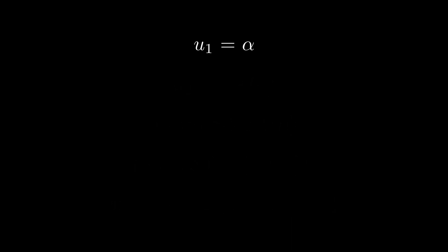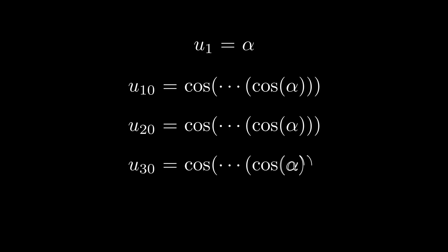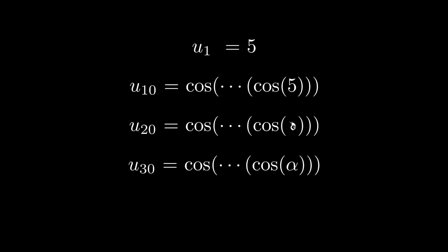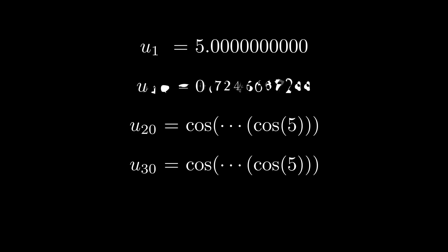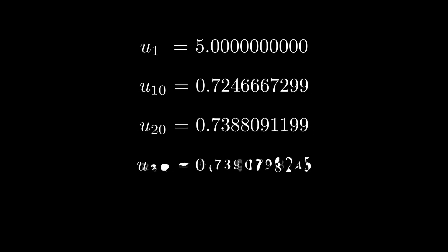Similar to our first sequence, later terms in the sequence should provide closer approximations to the real value. To actually calculate these expressions, we need to substitute a value in for alpha, let's say 5, although as we'll see later, you can use any number. And we can see that u(30) is actually extremely close to the true value.